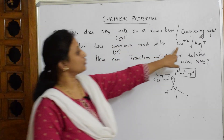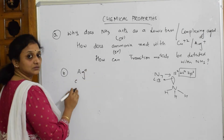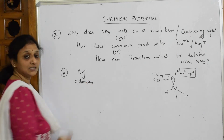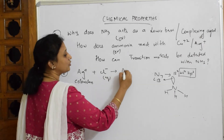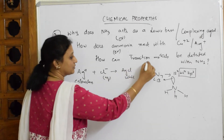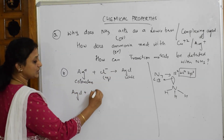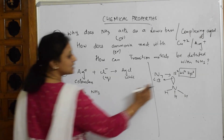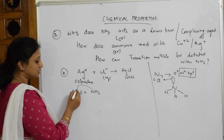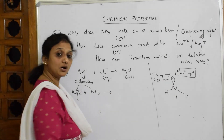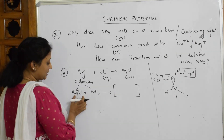Now for the second part — detecting silver. The Ag⁺ ion is colorless. I first add Cl⁻ aqueous solution, which forms a white precipitate of silver chloride (AgCl). Now I allow this AgCl to react with ammonia to detect silver. Ammonia has a lone pair of electrons, and silver requires a pair of electrons, so the lone pair shifts to silver.